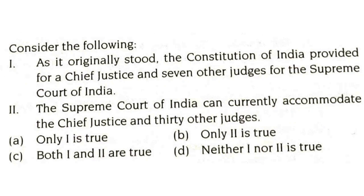As it originally stood, the constitution of India provided for the Chief Justice and seven other judges of the Supreme Court of India — this is correct. The Supreme Court of India can currently accommodate the Chief Justice and 30 other judges — this is also correct. Originally there was one Chief Justice and seven judges, but after the amendment in 2008, it now has a Chief Justice and 30 other judges. Both statements are true.